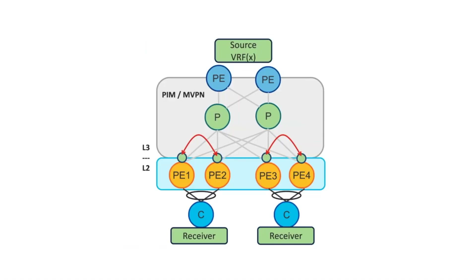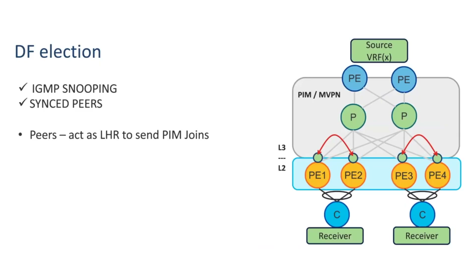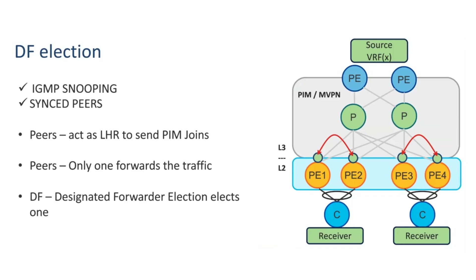Now let's talk about DF election. The designated forwarder in EVPN networks is a provider edge router responsible for sending broadcast, unknown unicast, and multicast traffic to a multi-homed customer equipment device on a given VLAN on a particular Ethernet segment. After IGMP snooping has been enabled and this information synced to the peer, both peers need to act like a last-hop router and send PIM join upstream. Once traffic arrives on both peers, only one should forward it to the receiver. Designated forwarder election elects one peer to do the forwarding. Between PE1/PE2 and PE3/PE4, there should always be an agreement on who forwards the multicast traffic to the access — in unicast both can forward, but in multicast that's not the case. And that wraps it up for this video. Thank you for watching.